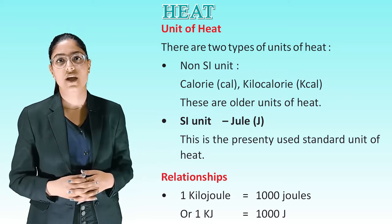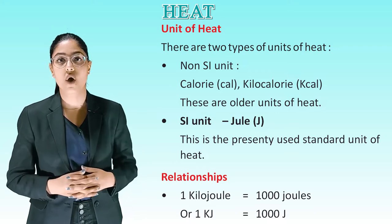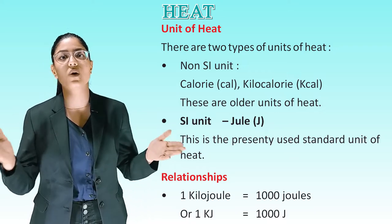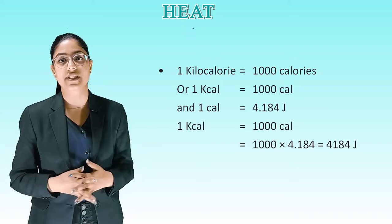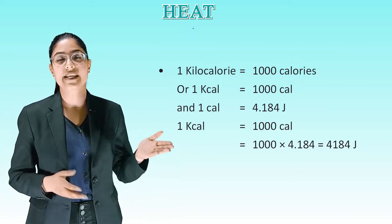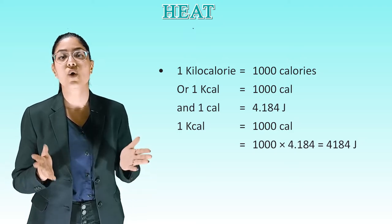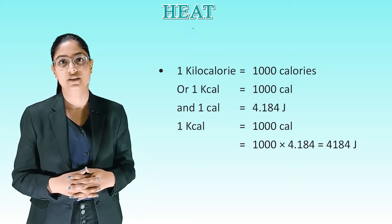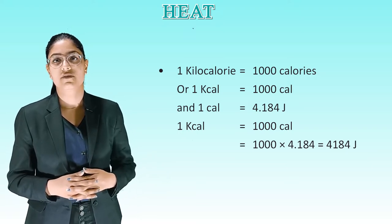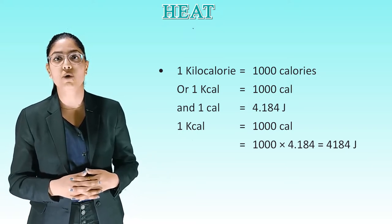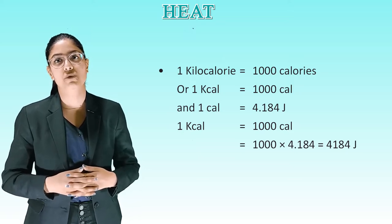Relationships: 1 kilojoule is equal to 1000 Joules, or 1 kJ = 1000 J. 1 kilocalorie is equal to 1000 calories, or 1 kcal = 1000 cal. And 1 calorie is equal to 4.184 J. This means 1 kilocalorie equals 1000 multiplied by 4.184, which equals 4184 Joules.